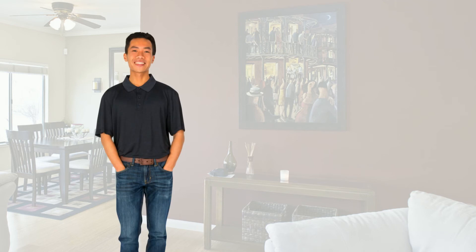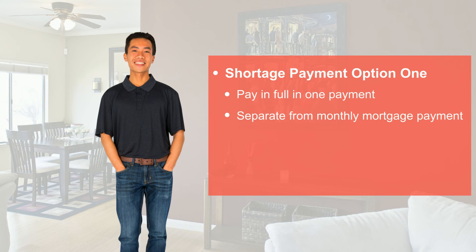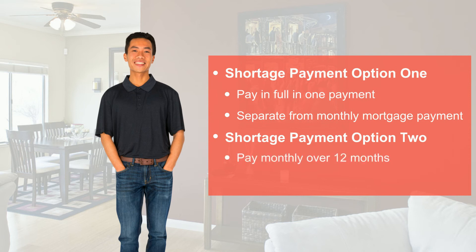Mike has two options for sending the shortage payment to Virginia Housing. His first option is to pay the shortage amount of $648.34 in full in one payment, made separately from his regular monthly mortgage payment. His second option is to pay a portion of the shortage amount each month over a 12-month period. The shortage payments are added onto his regular monthly mortgage payment, which will cause the total payment amount to increase.